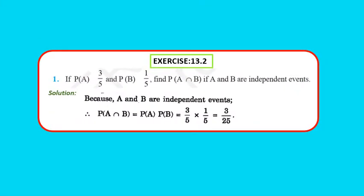Exercise 13.2, Question 1: If P(A) = 3/5 and P(B) = 1/5, find P(A∩B) if A and B are independent events. Since A and B are independent, P(A∩B) = P(A) × P(B) = 3/5 × 1/5 = 3/25. Please pause and note down the solution.